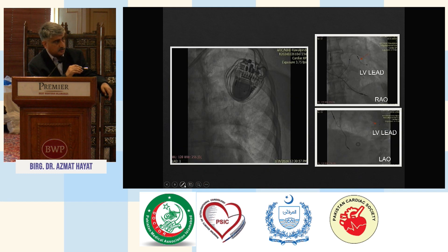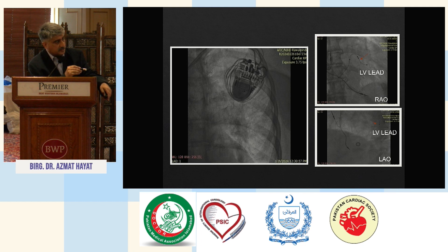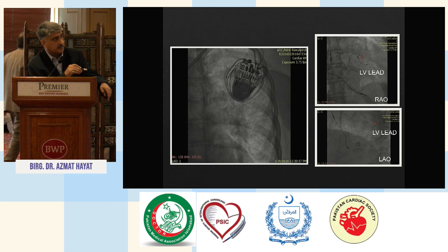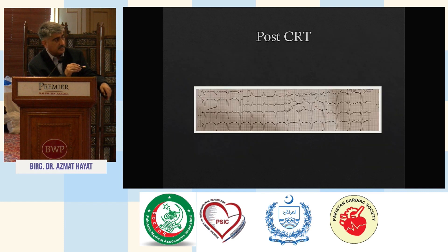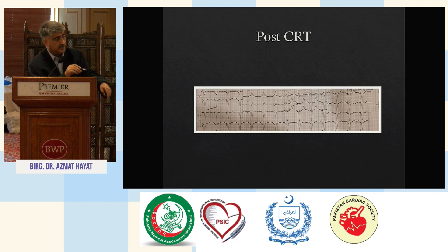This is how a CRT procedure is done. You can see the generator and the leads — the LV lead in RAO projection and the LV lead in LAO projection. It is a three-lead procedure. Post-CRT, there is a clear narrowing of the QRS, and symptomatically this patient has benefited — NYHA class has improved significantly and his echocardiographic dimensions have tremendously improved.